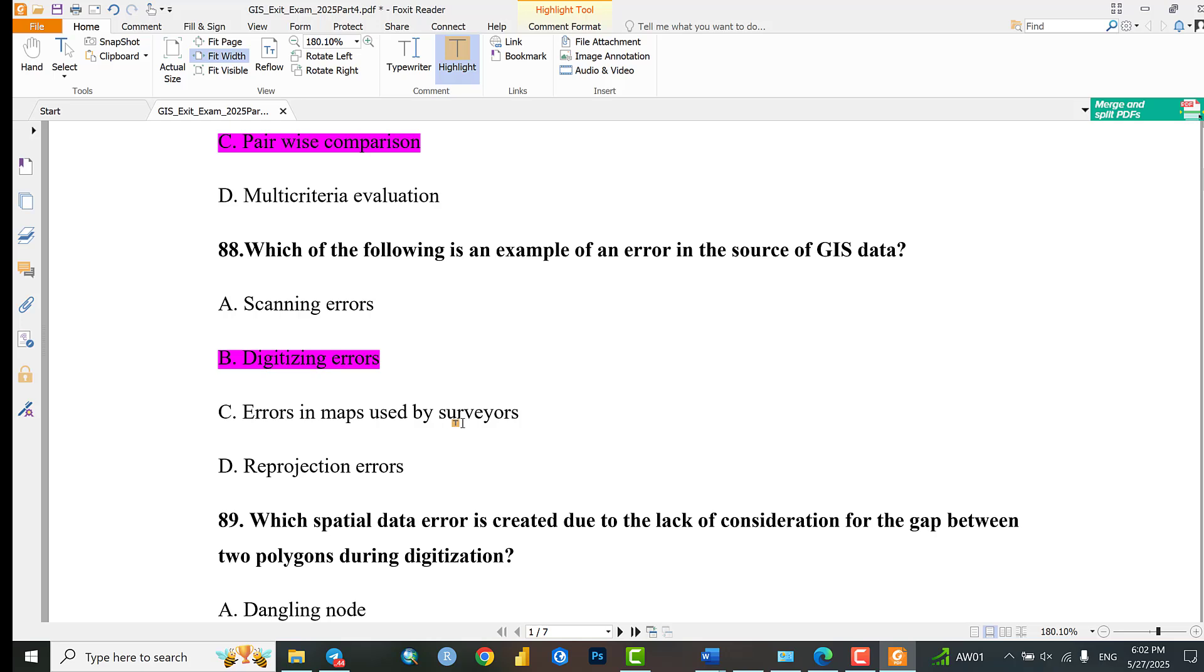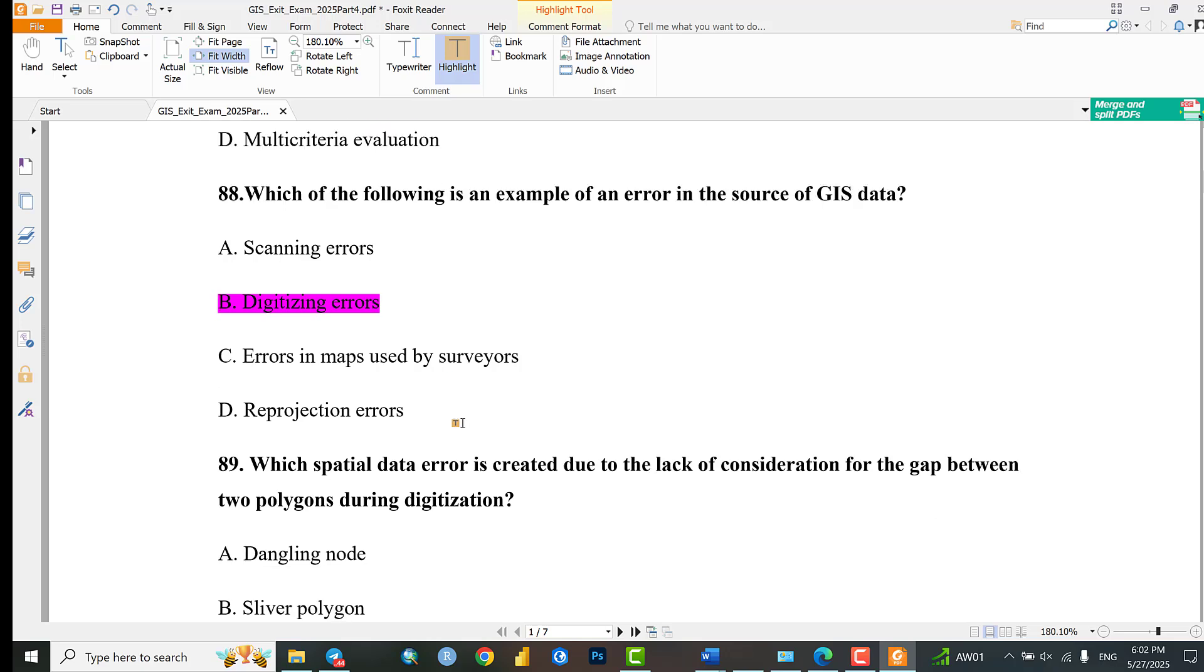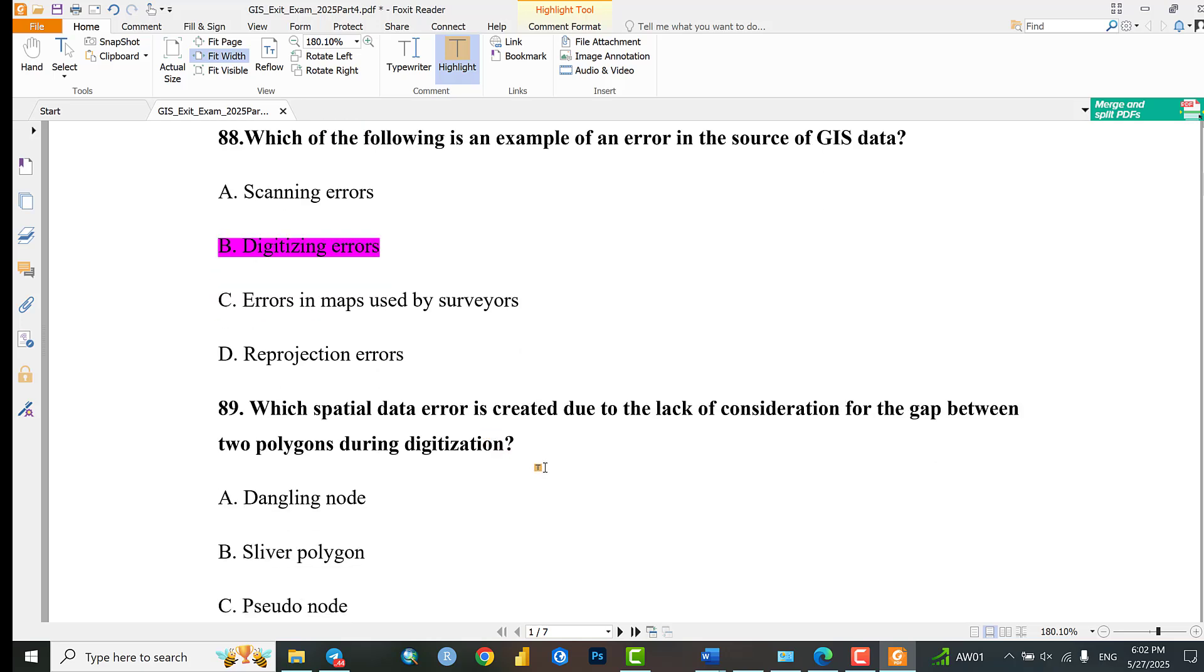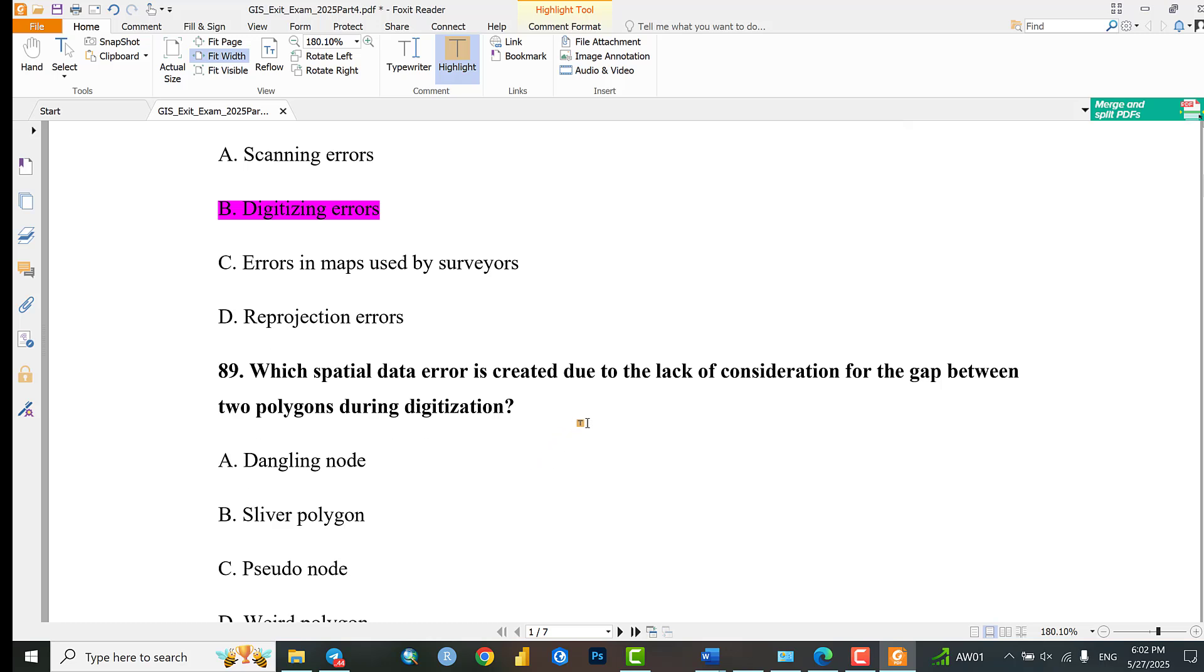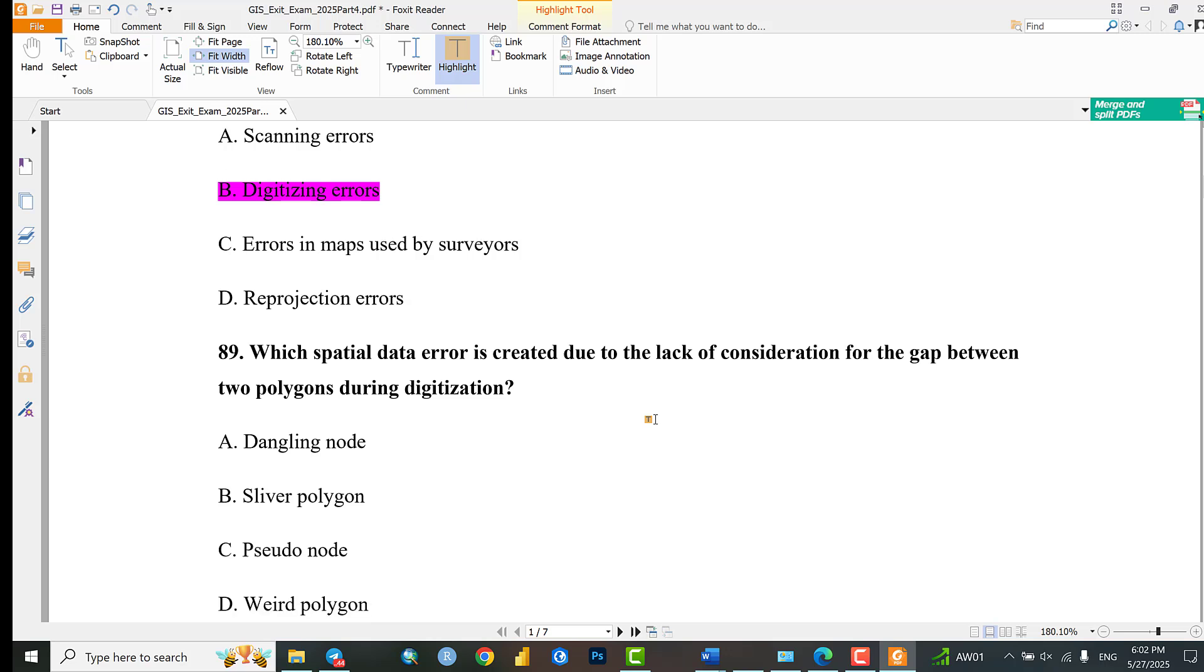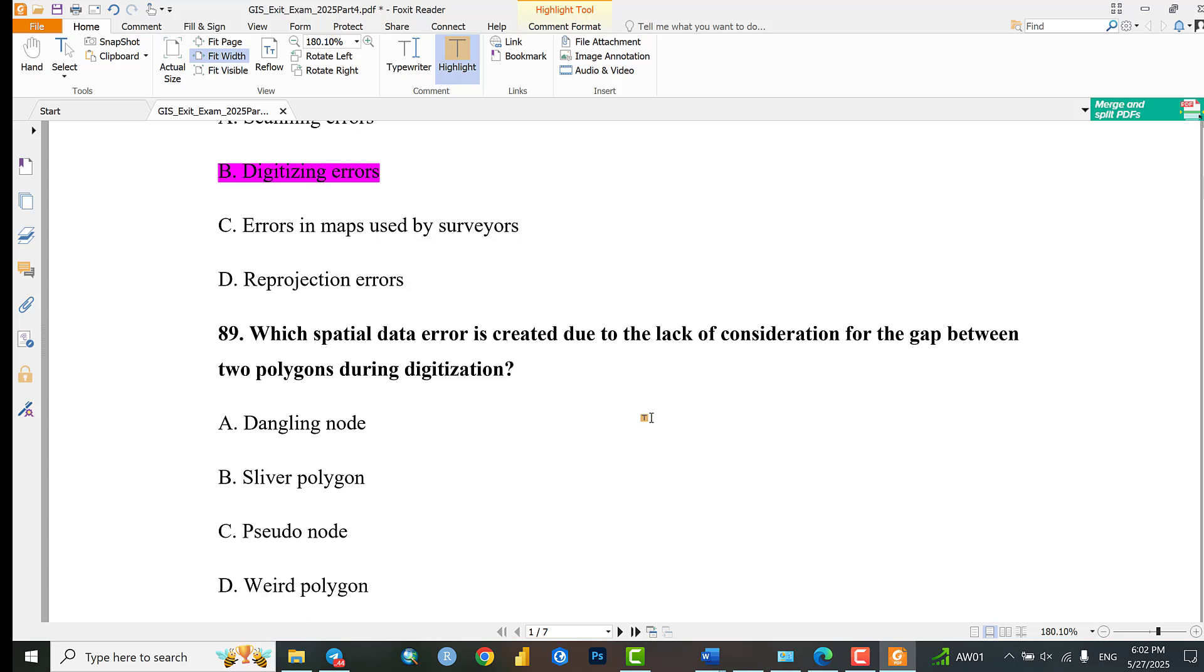Question 89: Which spatial data error is created due to lack of consideration for the gap between two polygons during digitization? A: Dangling node, B: Silver polygon, C: Pseudo node, D: Weird polygon. The answer is silver polygon errors.